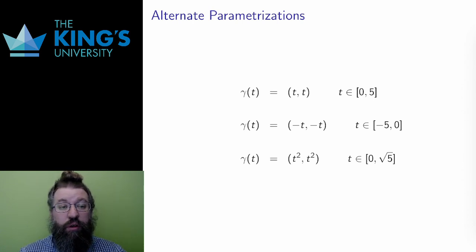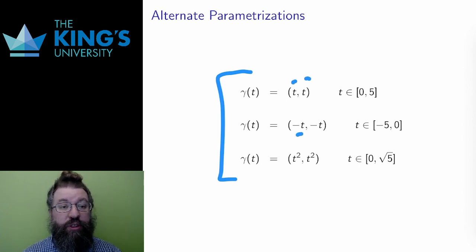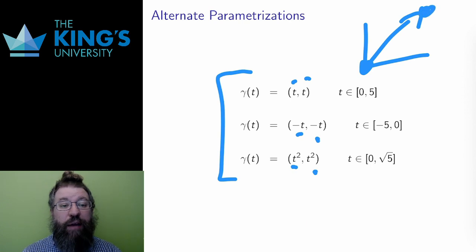Here are three parametric curves. They all have equal x and y coordinates, so they all travel on the diagonal line, as the example I showed before. They also all have the same start and end, (0,0) to (5,5). But they have different rates and directions of travel, different movements along the same shape.